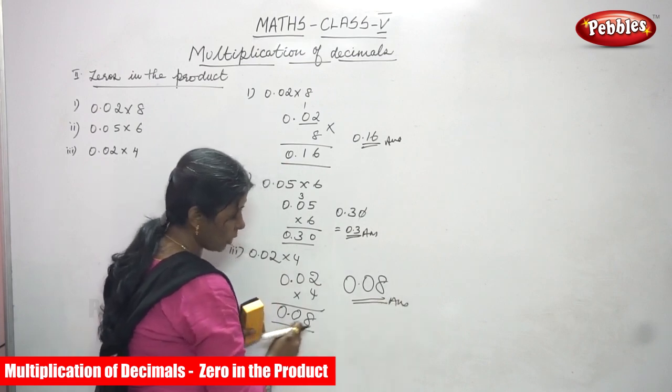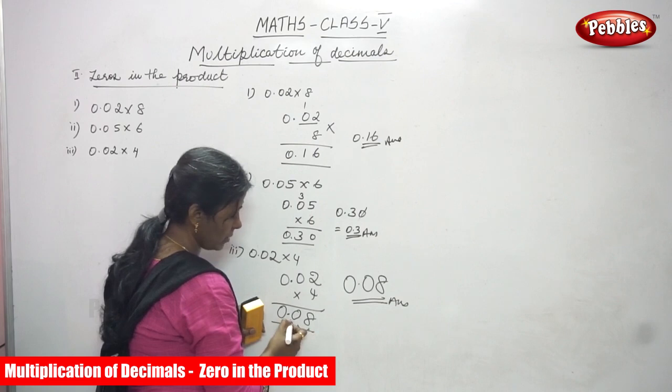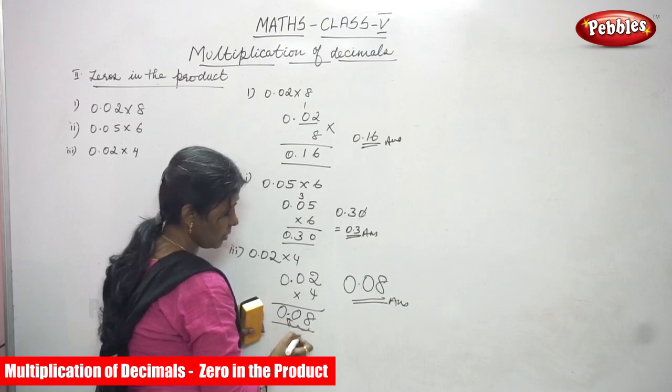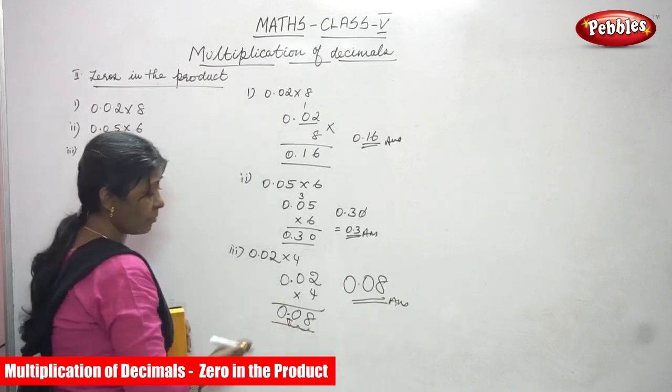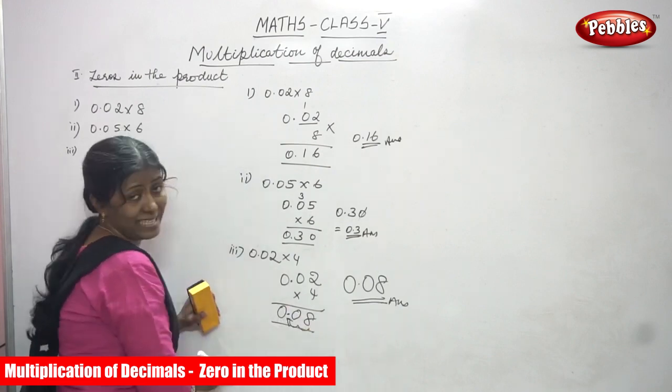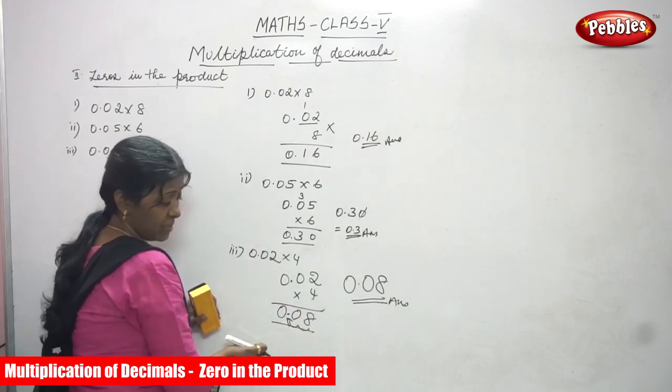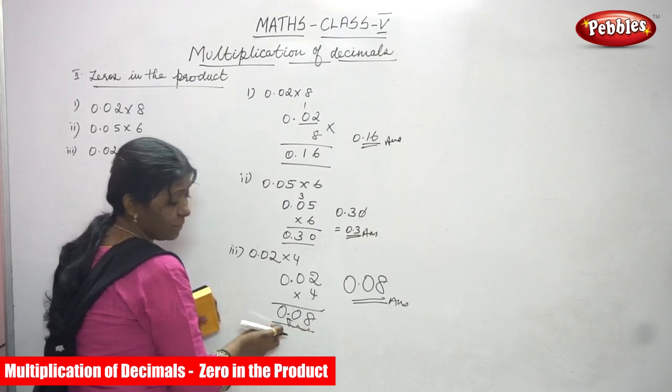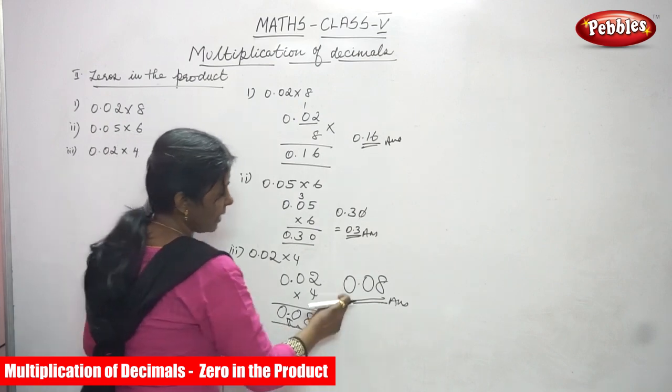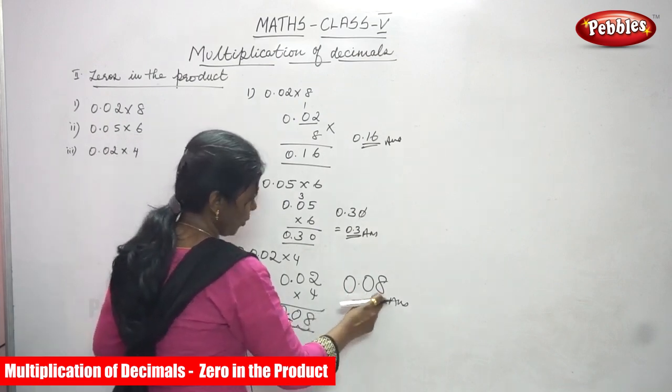So we have to what? Move from what? From right side we have to move the point from the right side. We have to move from right side. So from the right to left we have to do this. The answer is what? 0.08.